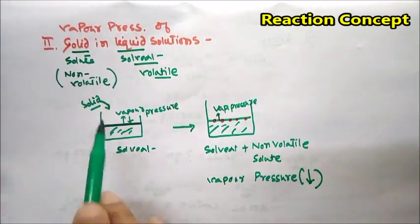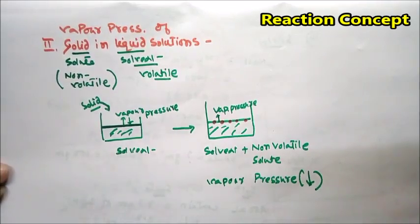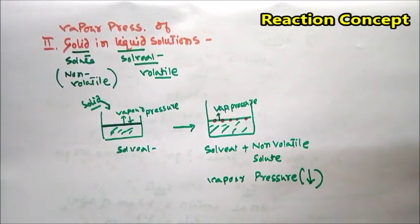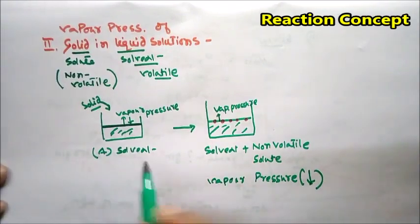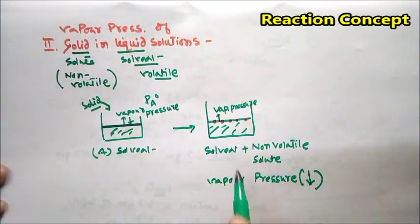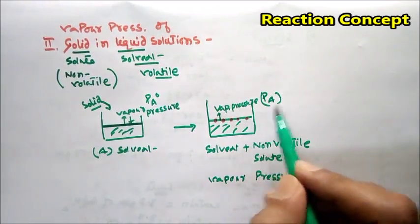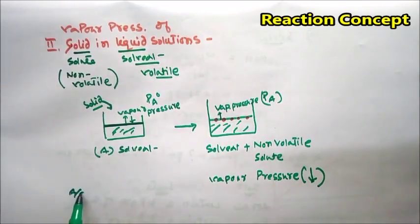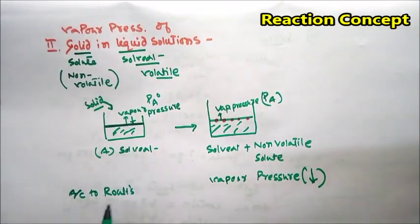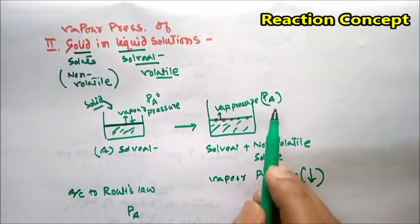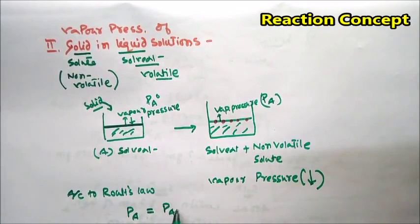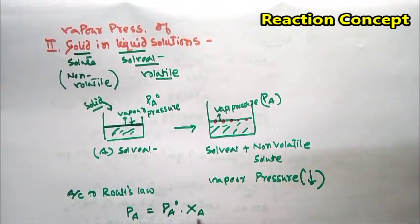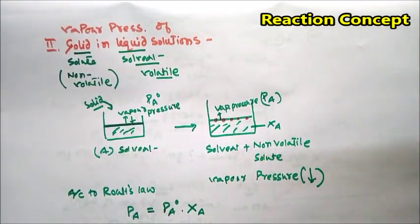We can say that on addition of a non-volatile solute into a volatile solvent, the vapor pressure of the solvent generally decreases. This is called lowering of vapor pressure. According to Raoult's law, if Pa0 is the vapor pressure of the pure solvent A and PA is the vapor pressure of the solvent in the solution phase, then PA = Pa0 × xA, where xA is the mole fraction of the solvent.